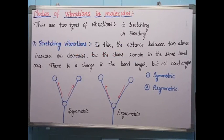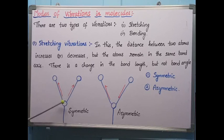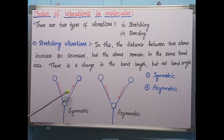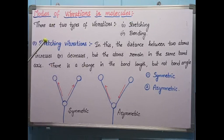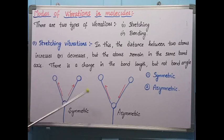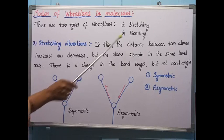Now let us see the types of vibrations. Each atom in a molecule is connected by covalent bonds. When we pass infrared radiations, these bonds vibrate front and back — that is called stretching. When the bonds move up and down with respect to the central atom, that is called bending.